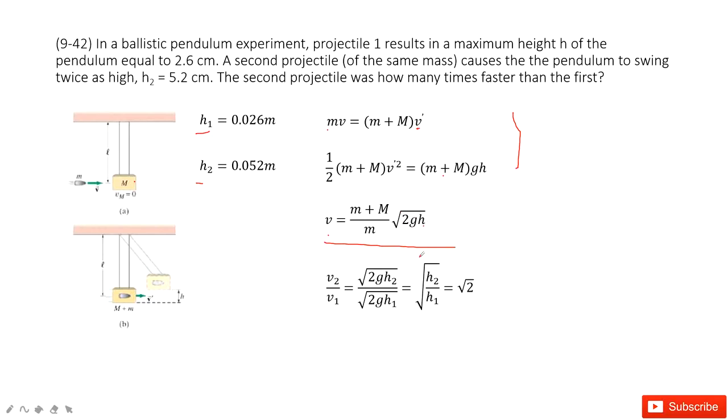And then in this time, we know two heights. We need to find the ratio for velocity, V2 divided by V1. So we input it inside. We get square root 2. Thank you.